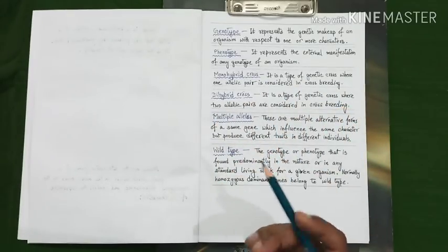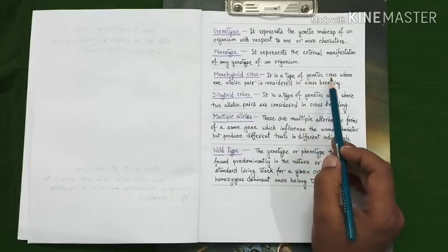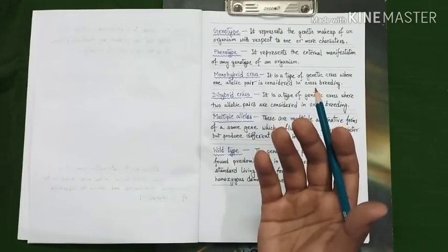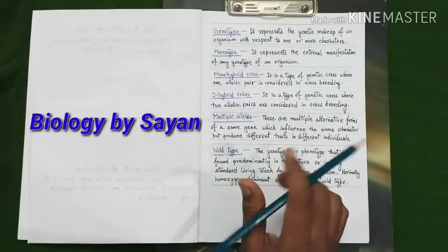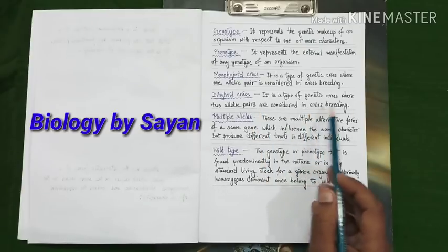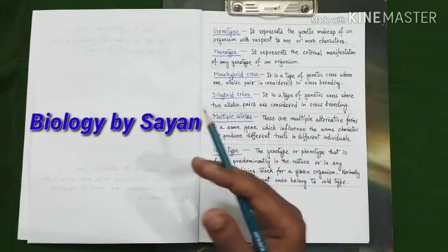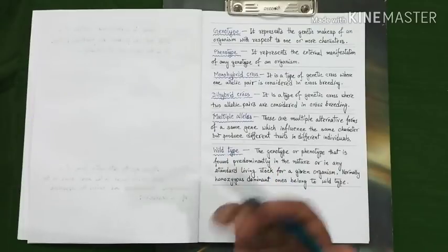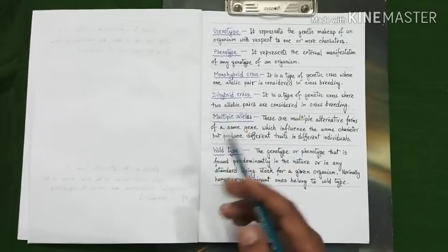Now, let's discuss about monohybrid cross and dihybrid cross. Monohybrid cross is the type of genetic cross where one allelic pair is considered in cross breeding — a type of genetic cross where two individuals are crossed depending on their single contrasting character. Dihybrid cross is a type of genetic cross where two allelic pairs are considered in cross breeding — two individuals are crossed that are different from each other depending on two contrasting characters. In monohybrid cross we consider a single pair of contrasting characters, while in dihybrid cross we consider two pairs of contrasting characters.